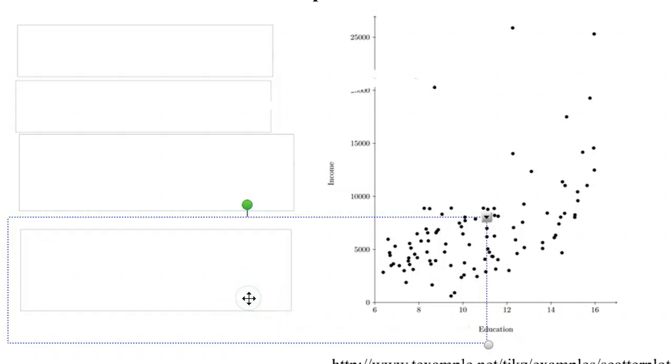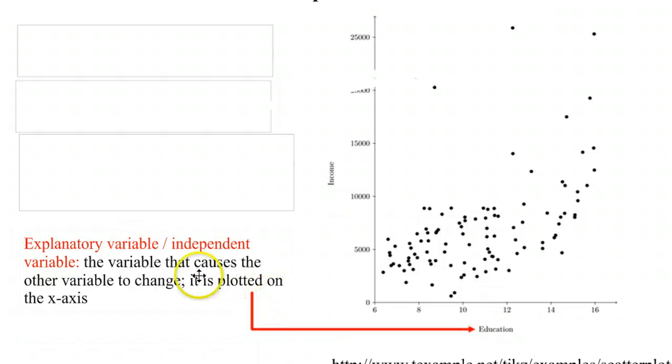The one along the bottom, the education, is going to be the explanatory or independent variable. Now, it doesn't mean that whatever is down here necessarily causes the other, but when you have an assumption or a reason to believe that one of them is the explanatory variable, that's the one you're going to put down here.